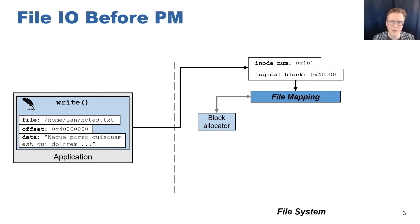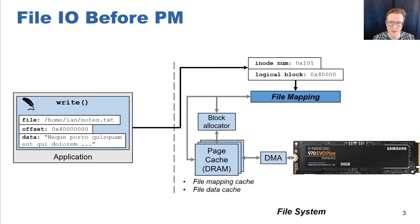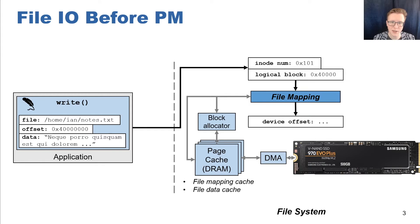In this example, the file mapping structure, which is stored on an SSD, is fetched from the device and cached in a DRAM cache known as a page cache, where it is then consulted to determine the corresponding physical block of this file. The file mapping structure then locates the device offset and uses this offset to write the data from the application to the device.